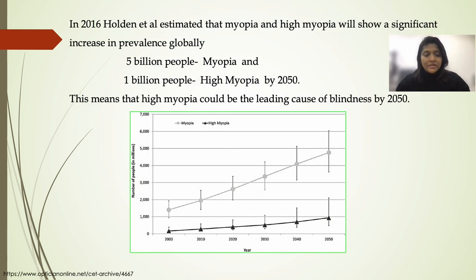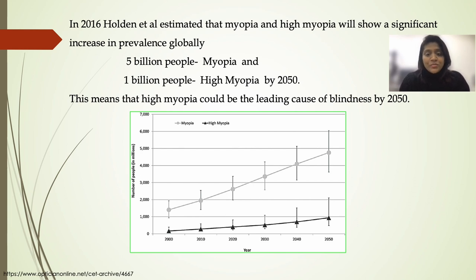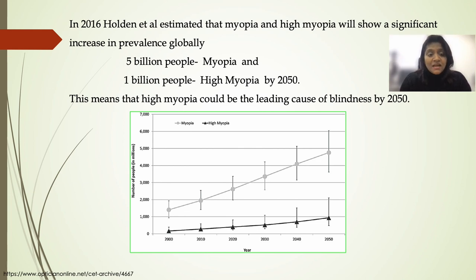Brian Holden and his team of expert scientists published in 2016, estimating that myopia and high myopia will significantly increase in prevalence globally. They estimated that by 2050 about 5 billion people are going to be myopic and about 1 billion people are going to be highly myopic, meaning high myopia could become a leading cause of blindness by 2050.